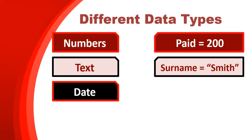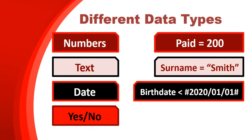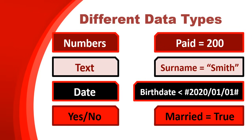When you get to text, you must put double quotes around it. So if you want a field to contain the word 'smith', you must put smith in double quotes. For dates, you can't say less than 2020 because 2020 isn't a date - it's a number. You must refer to a full date, like the first of January 2020, and dates are surrounded by hash symbols. Make sure you mention the day, month, and year. For yes/no fields, you simply type yes or no - or true or false - with no double quotes or hashes needed.